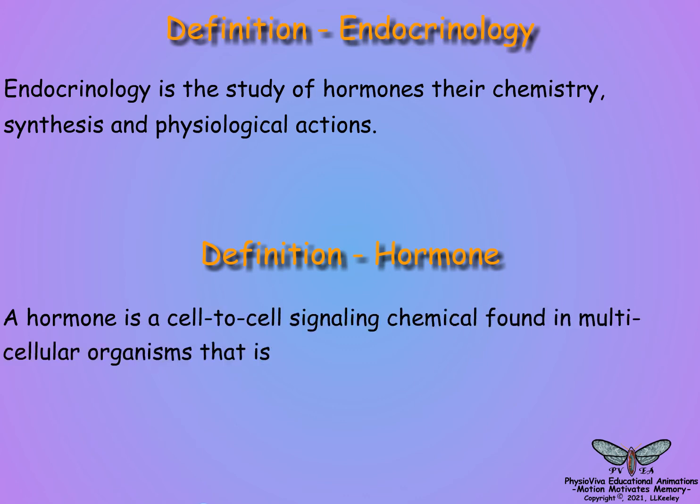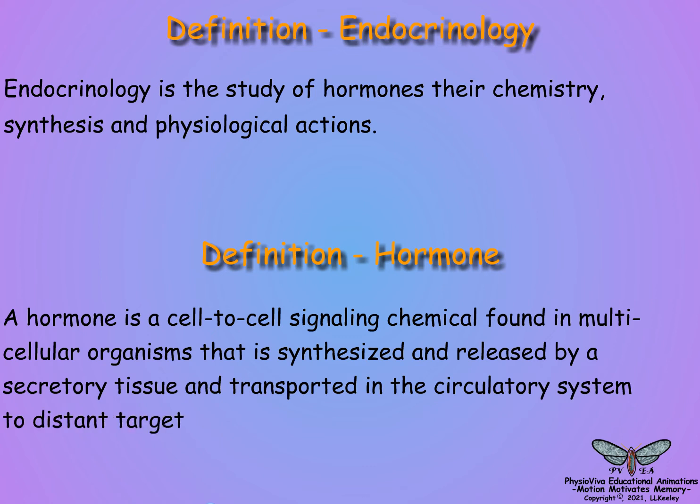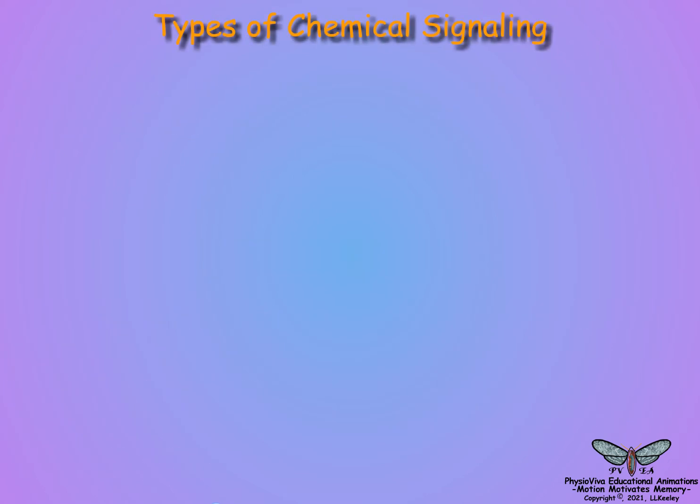Hormones are synthesized and released by a secretory tissue and transported in the circulatory system to distant target cells where they exert a profound physiological response. There are four types of signaling chemicals that fall into the following categories.